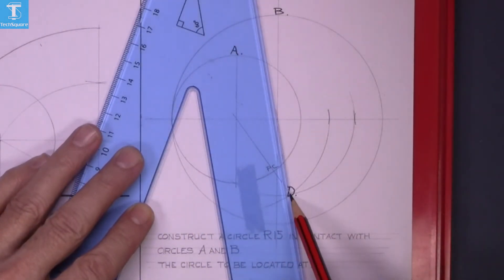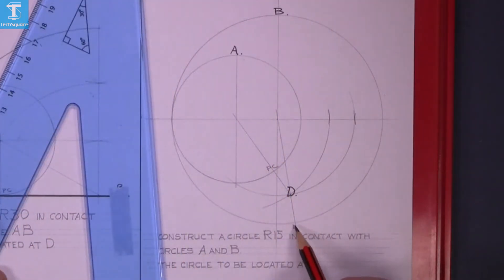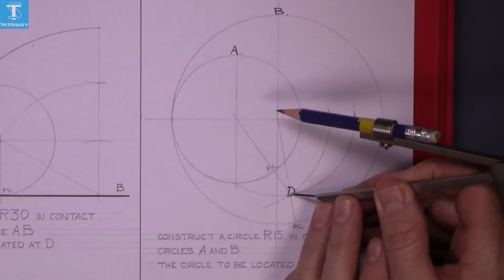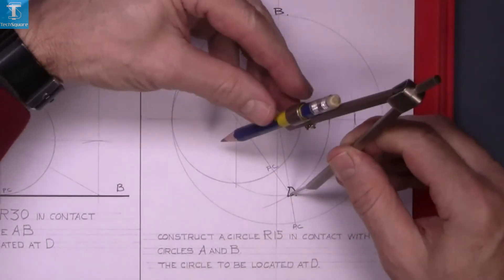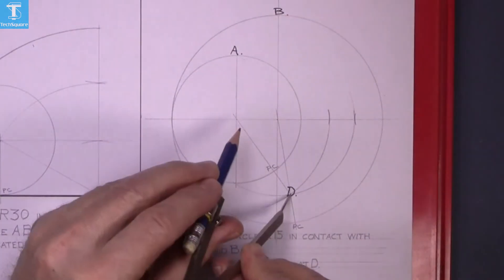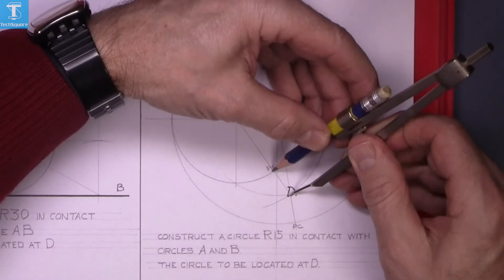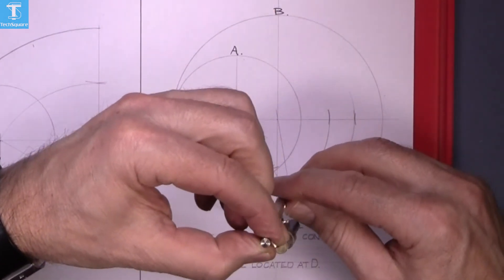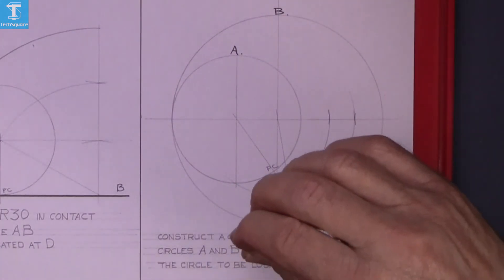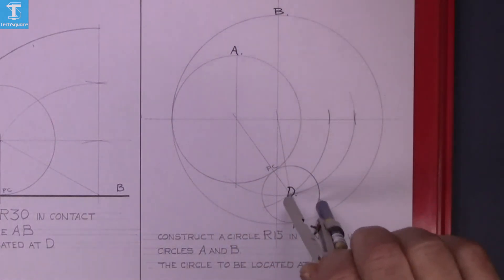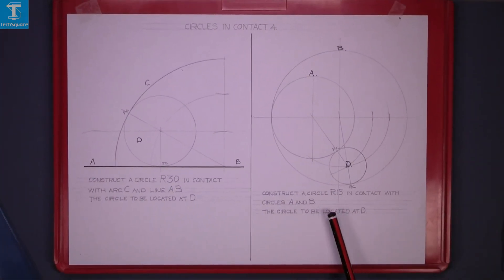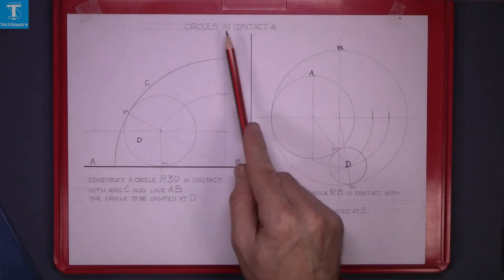That gives us a point of contact. With your compass in the new center, set it to one of the points of contact and scribe your circle. That completes that question, and that's circles in contact 4 complete.